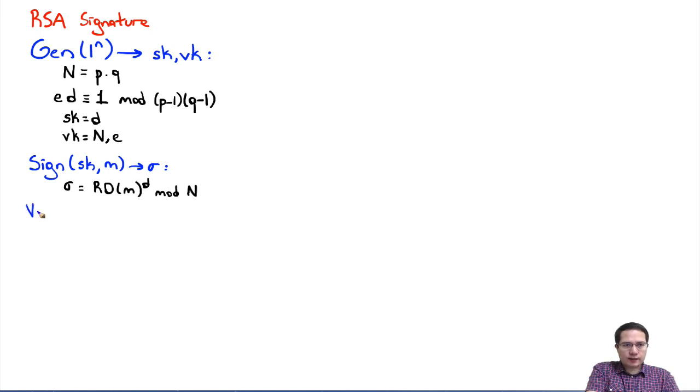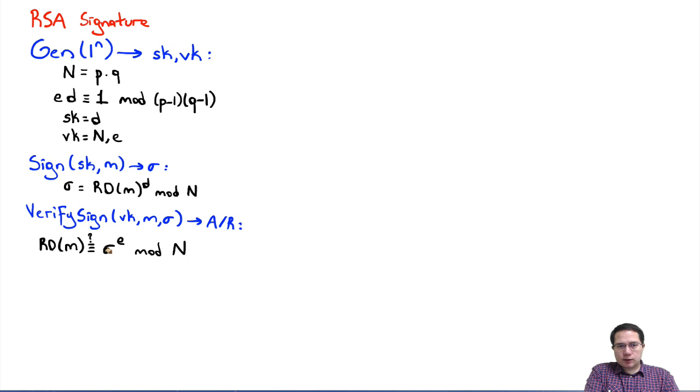And then we could verify the signature using the verification key VK, which is public, given the message and the signature together. And this outputs either accept or reject. It simply output the result of this condition: it checked if the random oracle of M is indeed equivalent to sigma to the power E, modulo N. So when you think about sigma to the power E, since E times D is 1, these will cancel out. This will give us random oracle of M. So this is a correct encryption scheme.